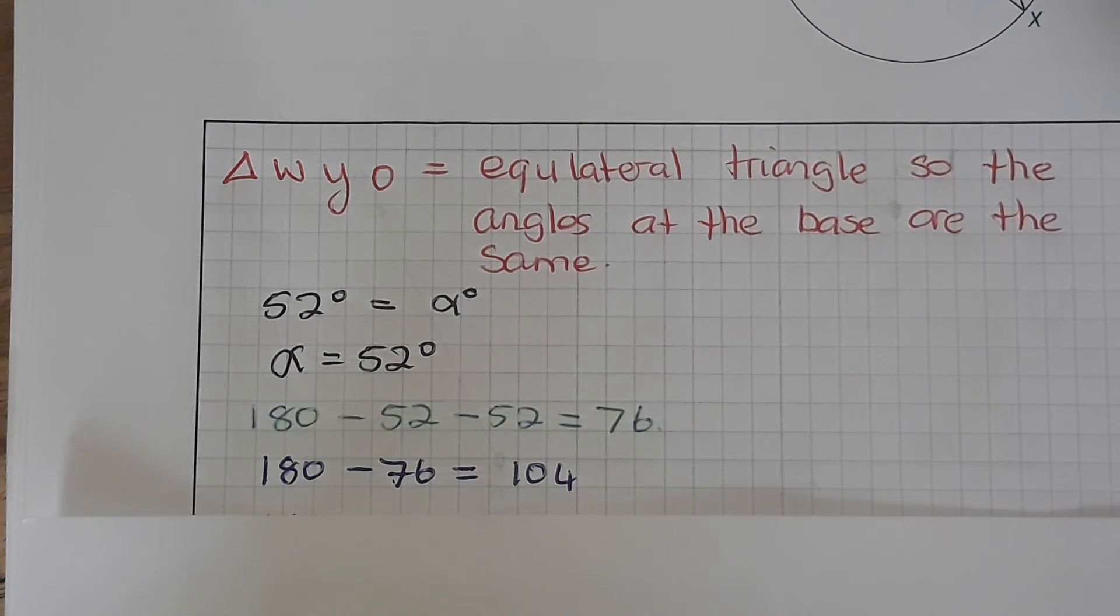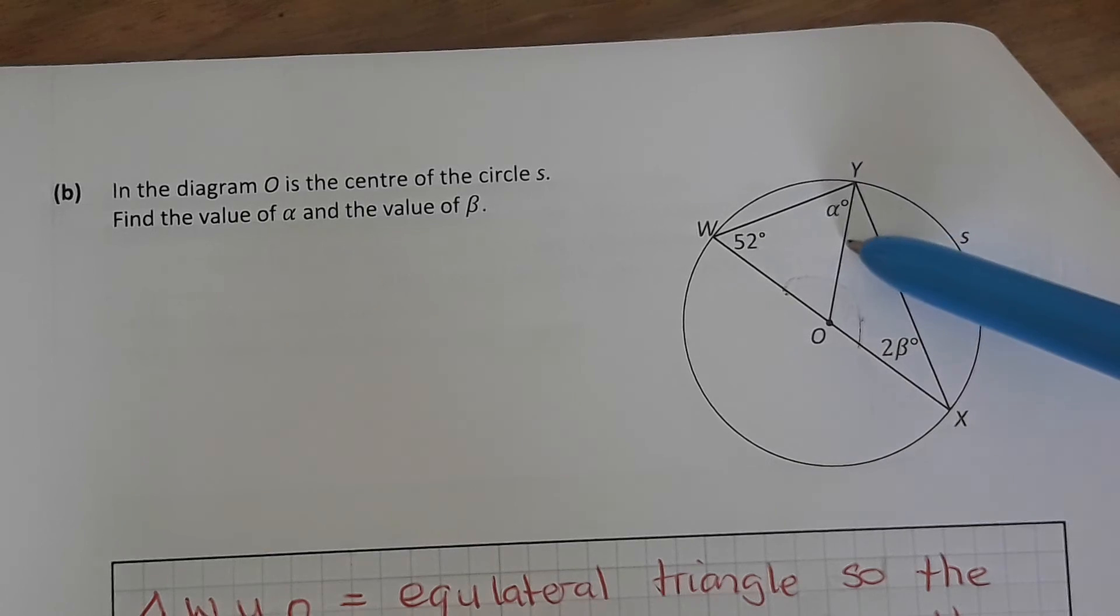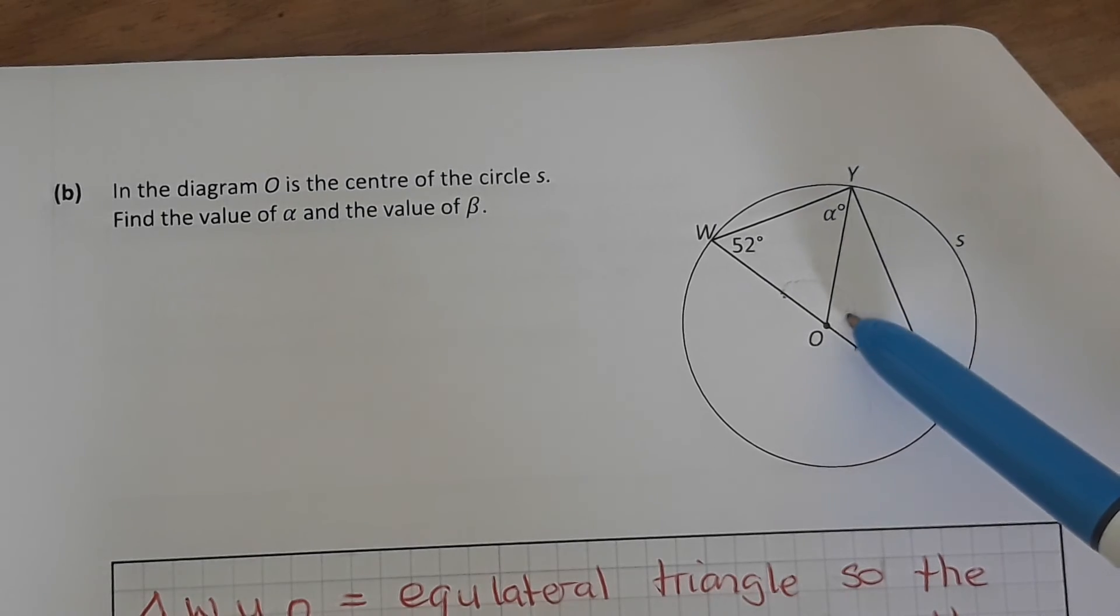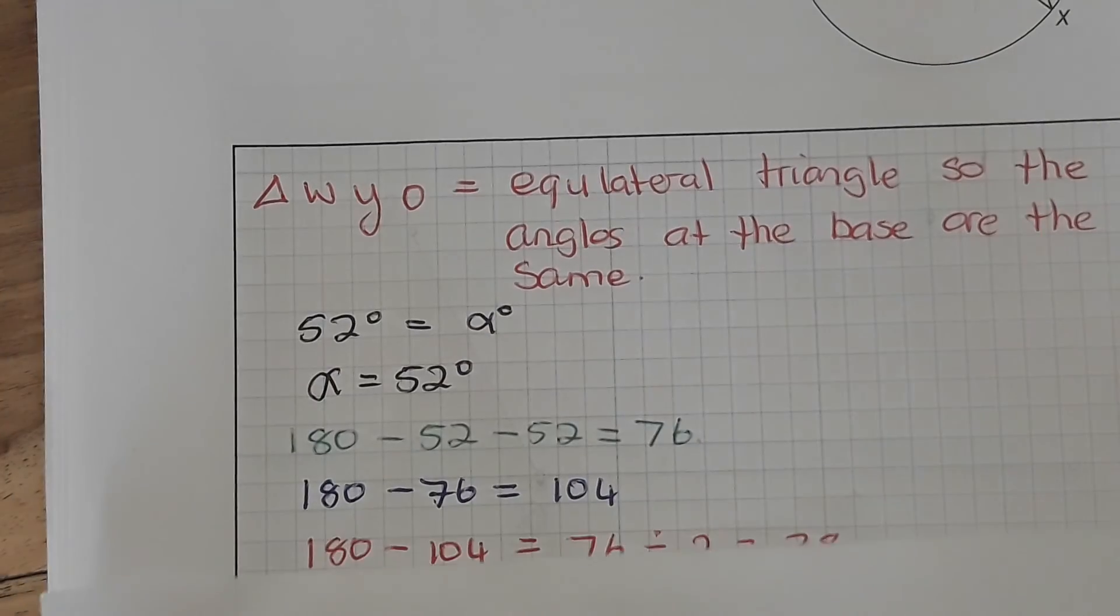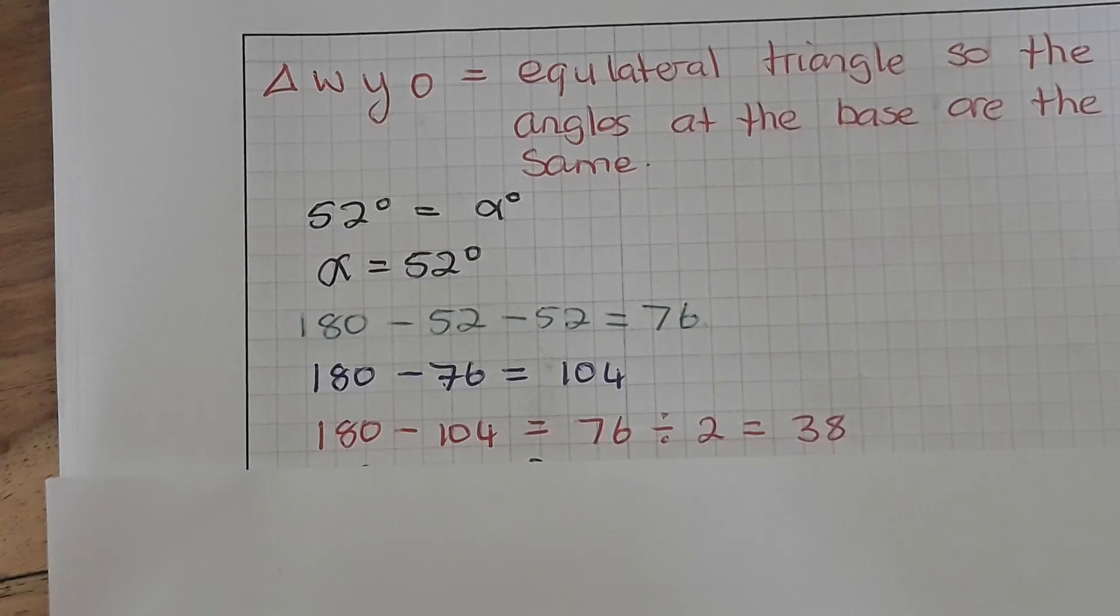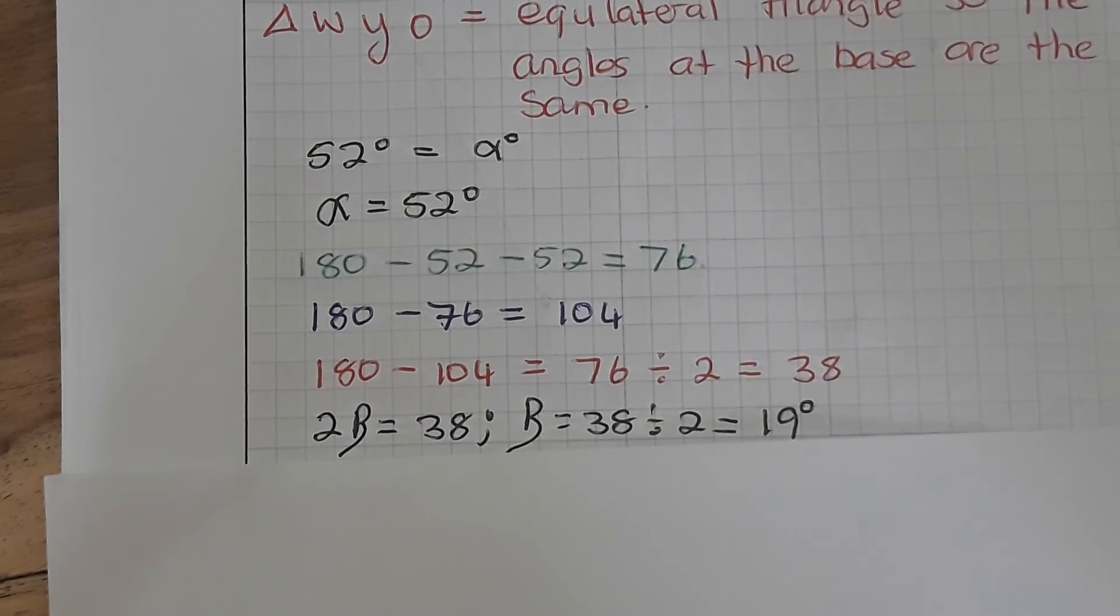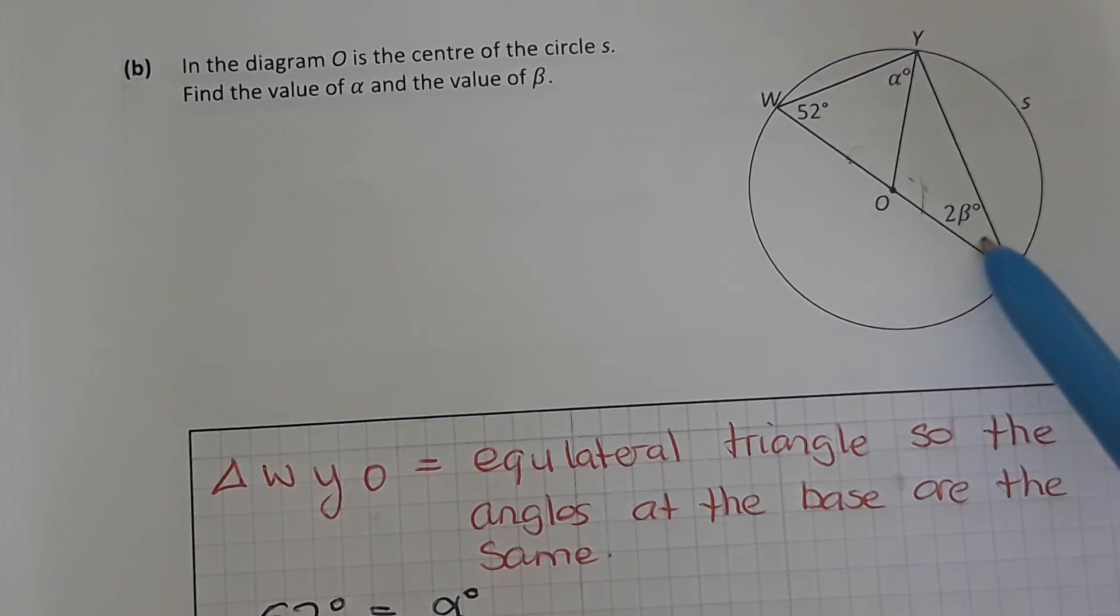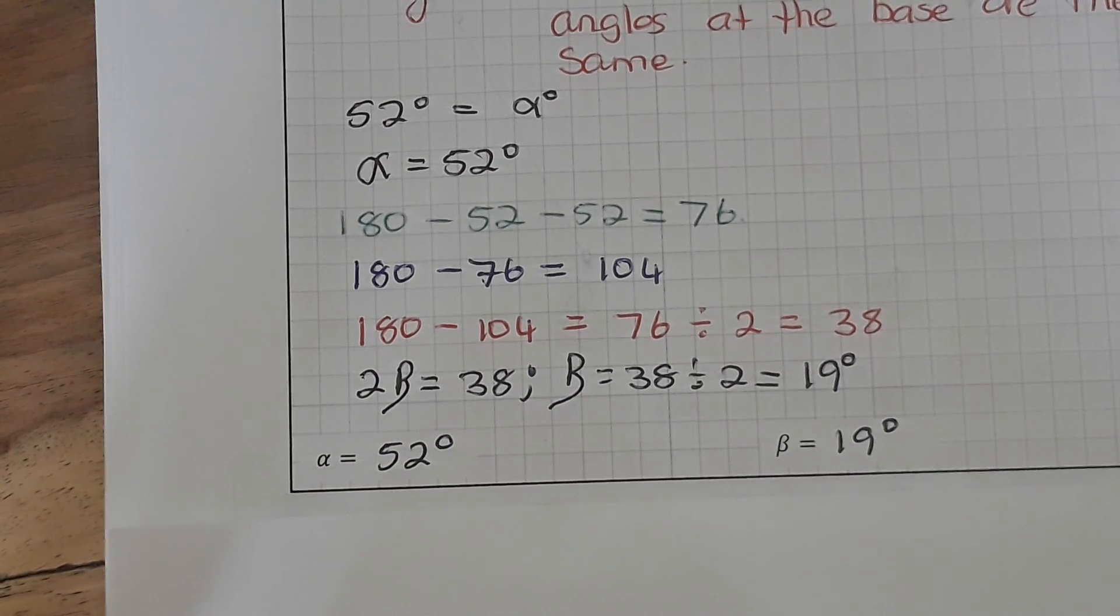Now you know again this is an equilateral triangle here, because this line and this line are the radius, so that means this angle and this angle will be the same. So if you know that angle, you can take it away from 180, and whatever answer you get, divide it in for these two angles here. So we have our 180, take away the 104, and you get 76. Divide that in 2 and you get 38. So you know that 2 beta, this one here, is 38. So to find out what beta is, simply divide 38 by 2, and you find out that beta is 19. So you have your alpha is 52 and your beta is 19.